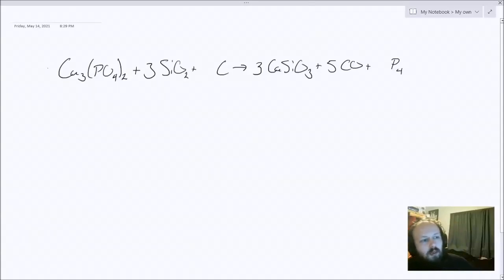So I need a two here. This three will change into a six. This three will also change into a six, keeping things balanced. This five will change to a ten, and now my phosphorus is already balanced with four on the left and four on the right.